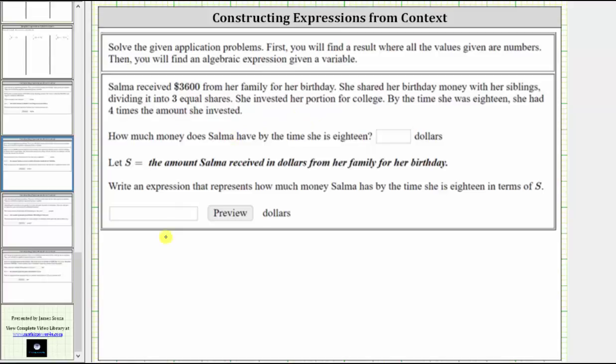Well, she received $3,600, but then she shared this money with her siblings by dividing it into three equal shares, which means we now divide this amount by three. And then she invests her portion, which is this quotient, and by the time she is 18, she had four times the amount she invested, which means we now need to multiply this amount by four, or express the amount as four times this quotient.